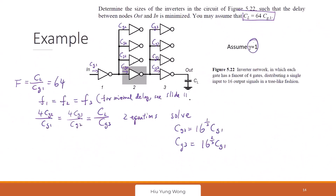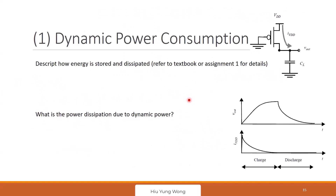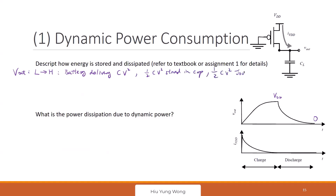Now let's go to power consumption — we did this in assignment one already. If I have a switching output voltage go high to VDD and then later go low to zero, how does the energy get consumed? When I go from low to high at the output, the battery delivers CV² total energy. Half of the CV² is stored in the capacitor, and then half of the CV² is lost as heat in the resistor.